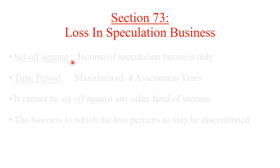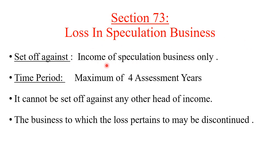Section 73 deals with loss in speculation business. Any loss in speculation business can only be carried forward and set off against speculation business income. The maximum carry forward period is 4 subsequent assessment years. It cannot be set off against any other head of income.